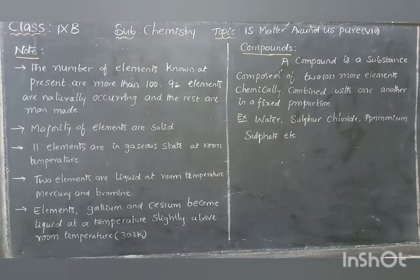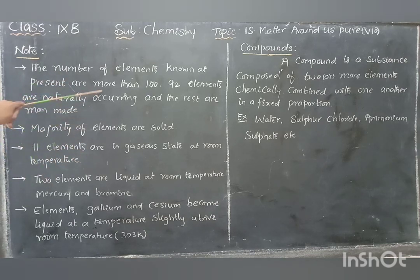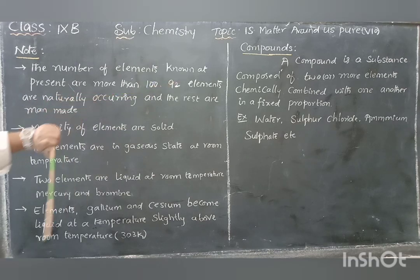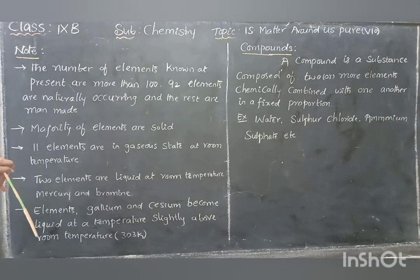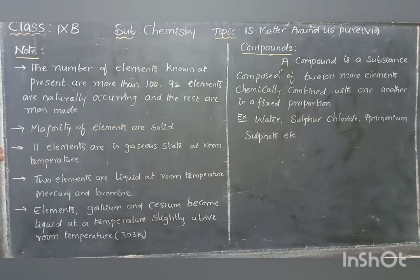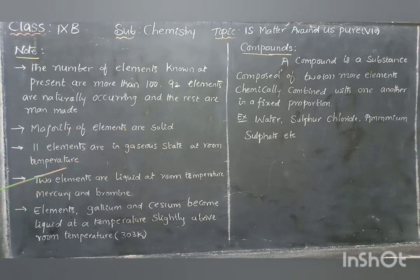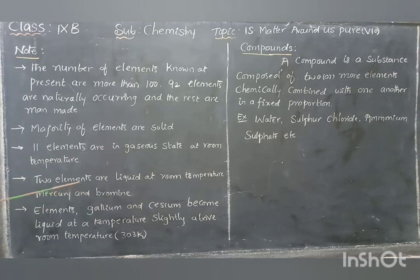Important notes regarding elements: The number of known elements is more than 100. Out of these, 92 elements are naturally occurring and the rest are man-made or artificial. The majority of elements are solid. Several elements are in gaseous state at room temperature. Two elements are liquid at room temperature — those are mercury and bromine.